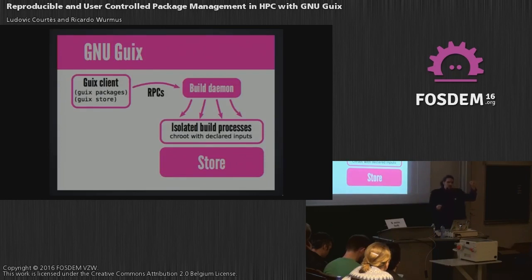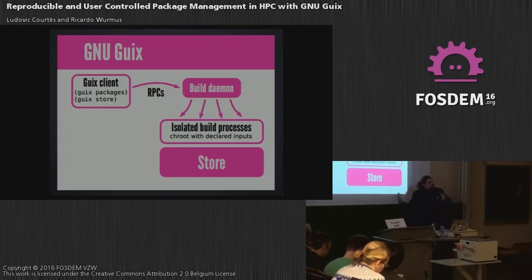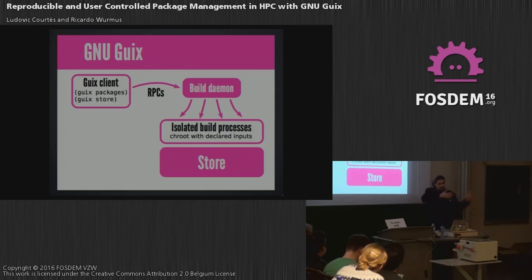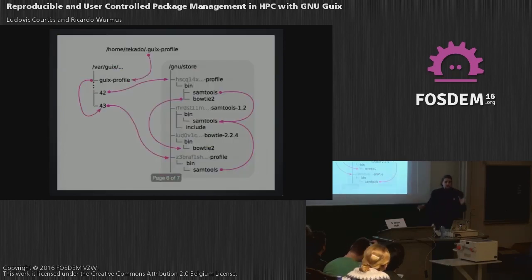GNU Geeks is a command line tool that users can run as unprivileged users. It communicates with a build daemon that runs as root, which performs builds on behalf of the user in isolated environments. We get close to bit reproducibility because the environment is exactly the same each time — only declared inputs are available, and no global state affects anything. The built software is then cached in a store where you can have all the different variants of Emacs, samtools, or whatever.